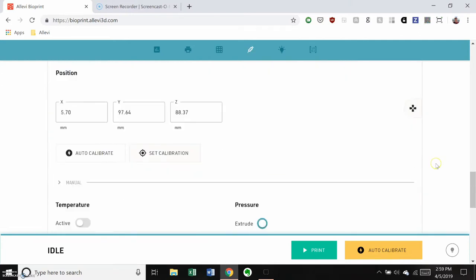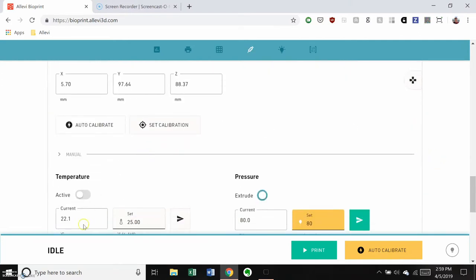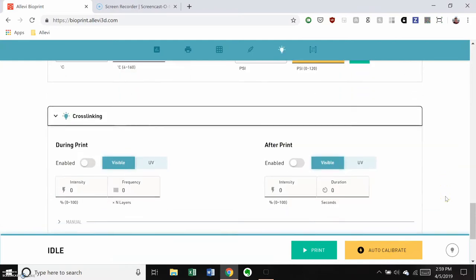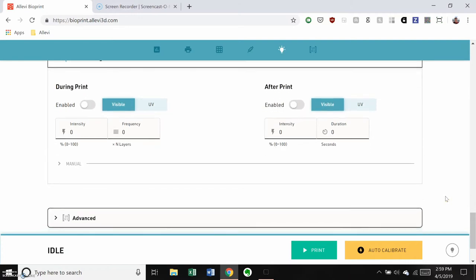In the extruder section, make sure the extruder is at room temperature and the pressure is set to 80 psi. Since we won't be using any cross-linking or advanced settings, you can just click print start.